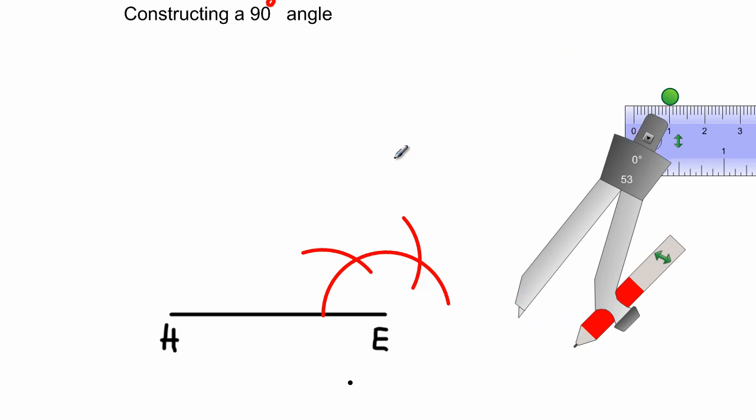By putting the compass here and swinging an arc, this angle from this first arc to the line segment HE is a 60 degree angle. Another 60 is formed between these two arcs, so 60 plus 60 would give us 120.